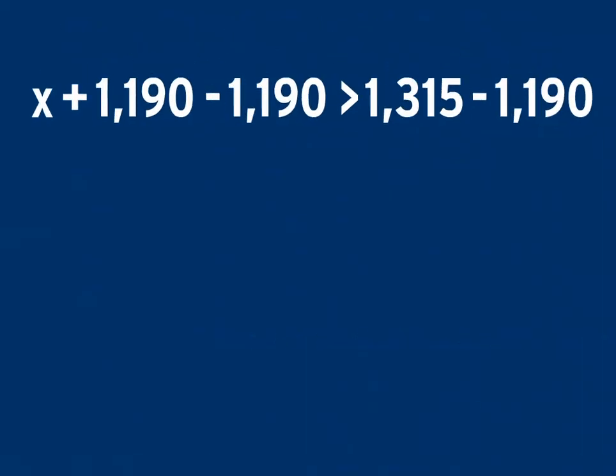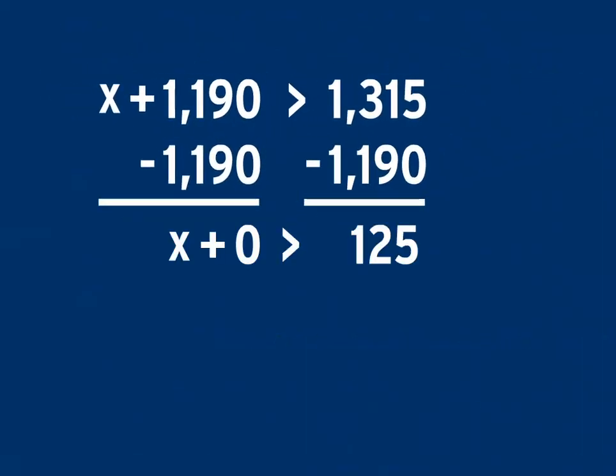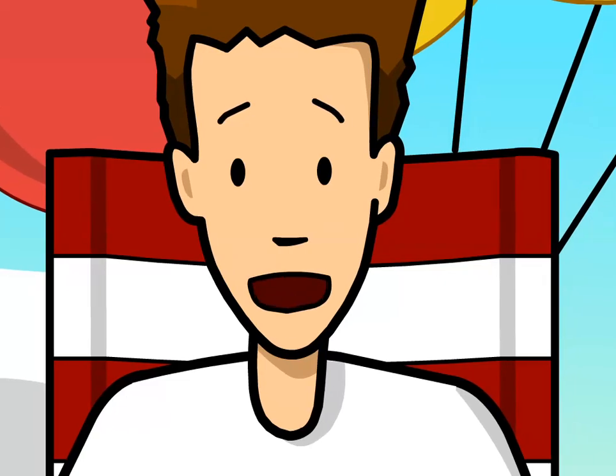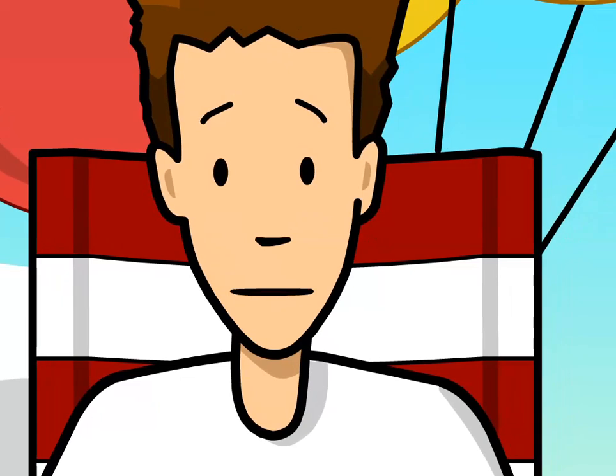Now, let's solve our inequality. x plus 1,190 minus 1,190 is greater than 1,315 minus 1,190, which equals 125. So, we need to climb more than 125 meters to clear that mountain.